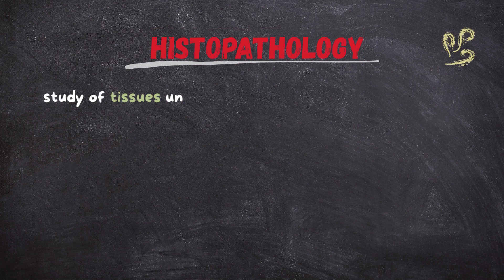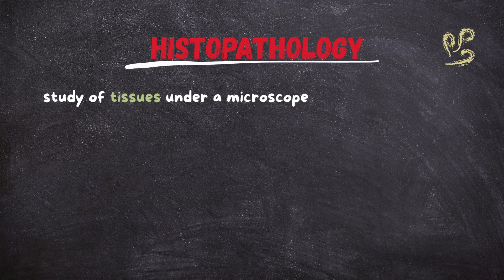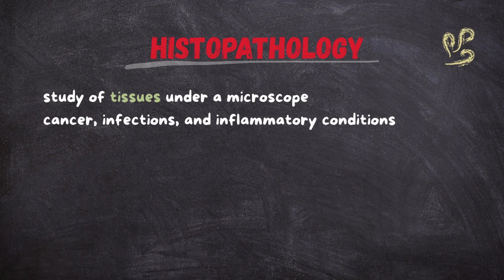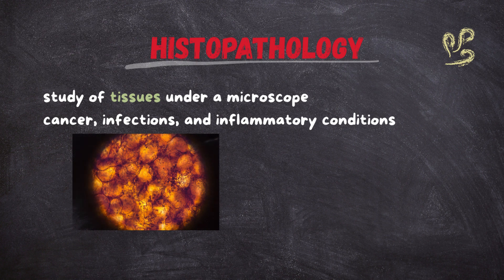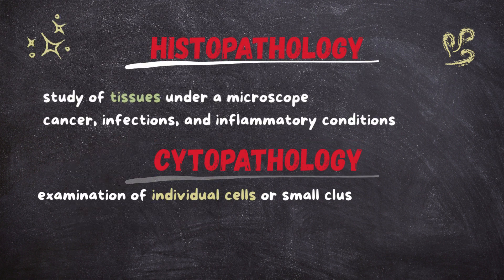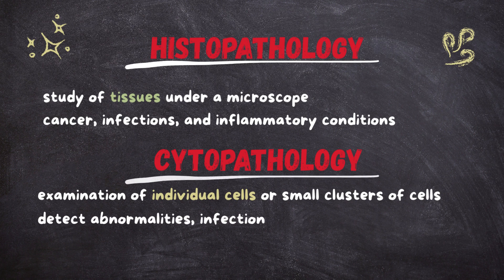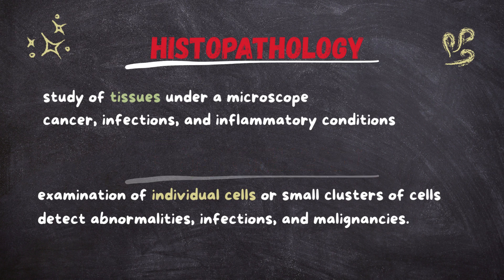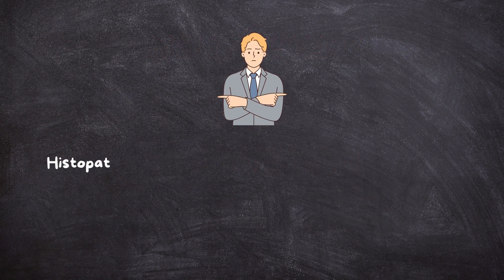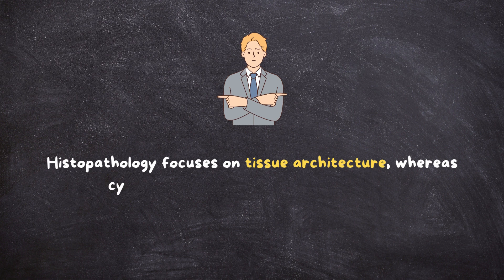Histopathology is the study of tissues under a microscope to diagnose diseases, particularly cancer, infections, and inflammatory conditions. It provides a detailed assessment of tissue architecture and cellular organization. Cytopathology is the examination of individual cells or small clusters of cells to detect abnormalities, infections, and malignancies. It is widely used in screening and rapid diagnosis of diseases. Key difference: histopathology focuses on tissue architecture, whereas cytopathology examines individual cells.